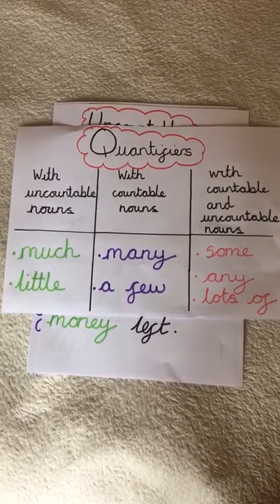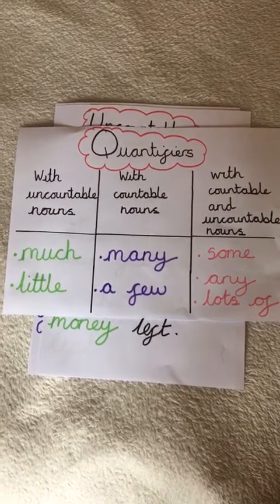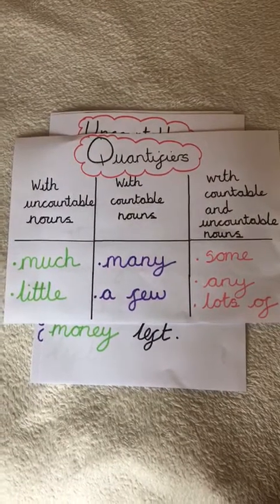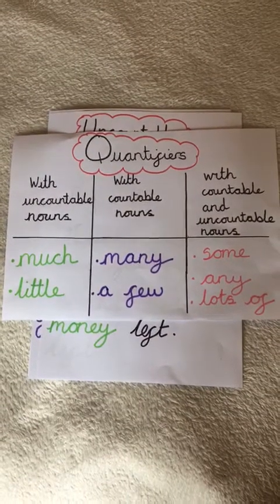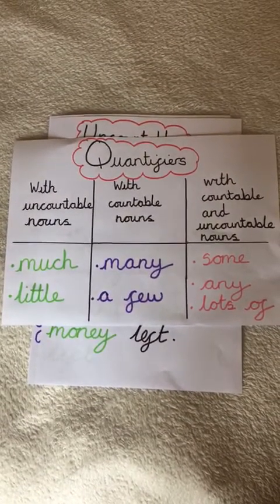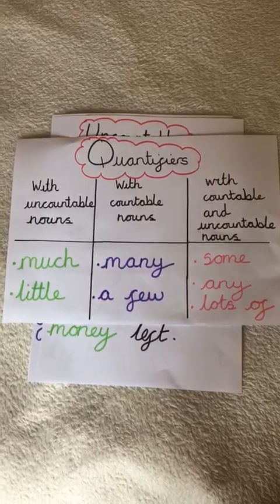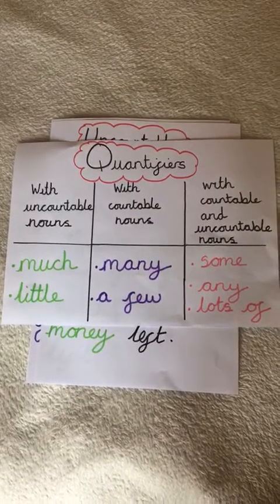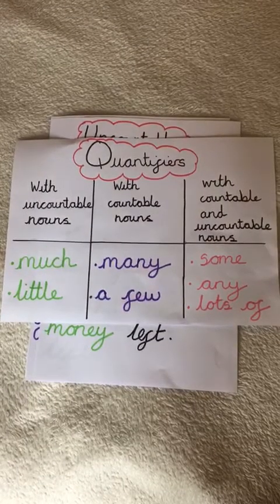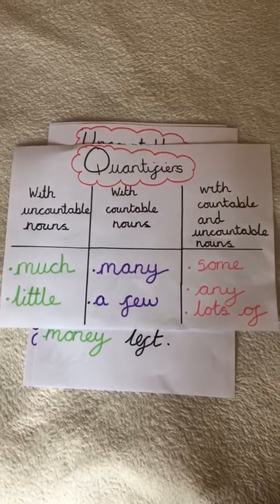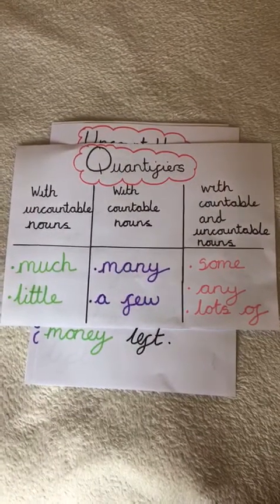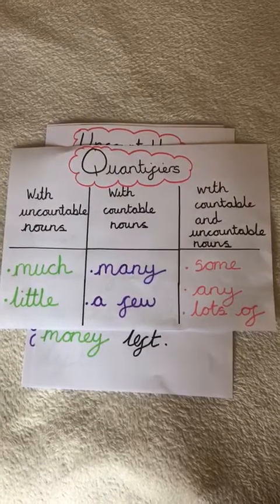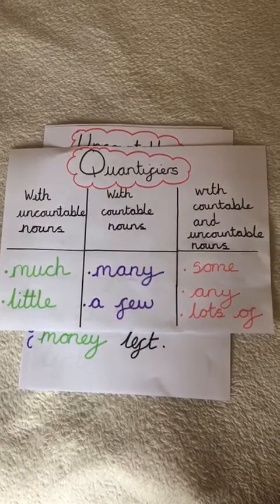Today we're going to be looking at quantifiers. A quantifier is a type of determiner. Quantifiers are used at the beginning of noun phrases. They are used to express an amount or degree of something. They are also used with persons. You can see here there are different types of quantifiers.